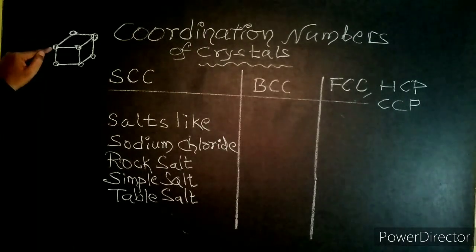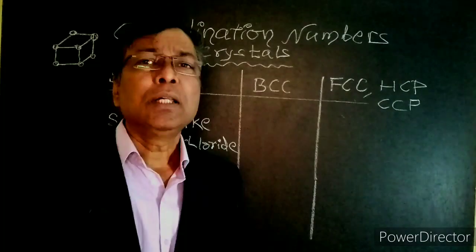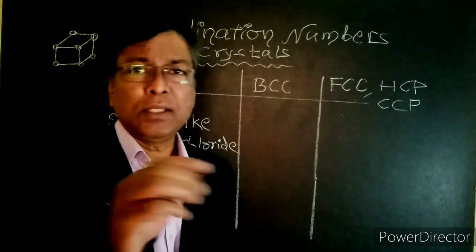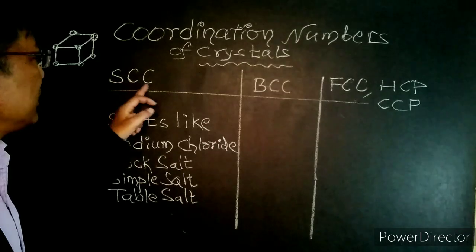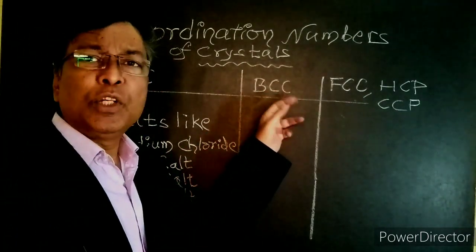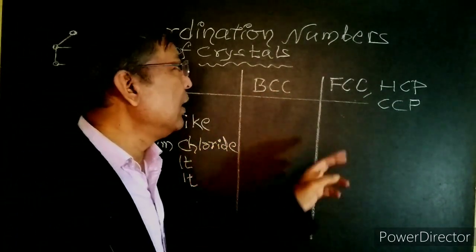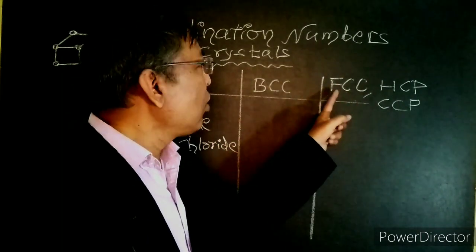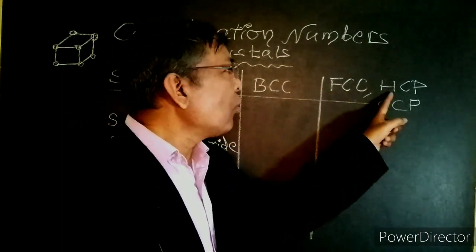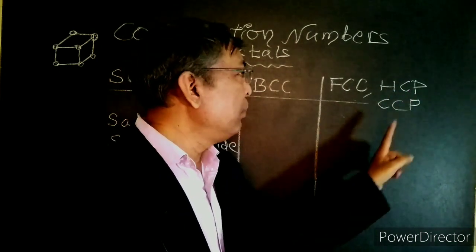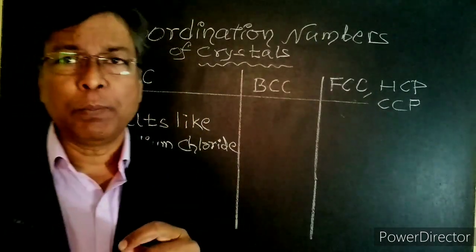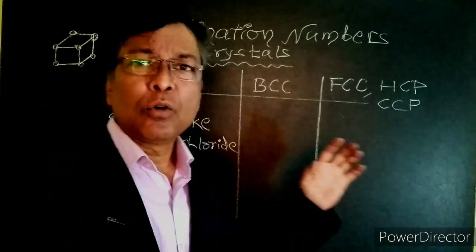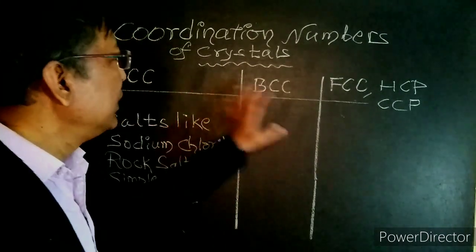Crystalline solids exist in different forms: simple cubic crystal (SCC), body centered cubic crystal (BCC), face centered cubic crystal (FCC), hexagonal close packing (HCP), and cubic close packing (CCP). Now I'm going to explain the first trick to find the coordination number of these crystals.